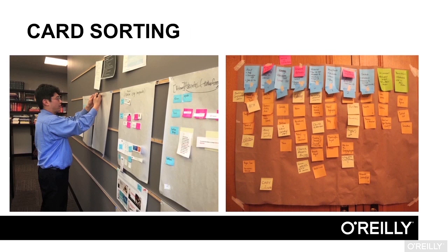Card sorting is the simple act of asking people to organize a group of items described on cards or sticky notes into meaningful categories. Card sorting can be done in person as part of a brainstorming activity, or it can be done remotely using online card sorting software. Card sorting is a great exercise to help stakeholders get aligned on priorities, and it's an essential tool in the early phases of designing information architecture.